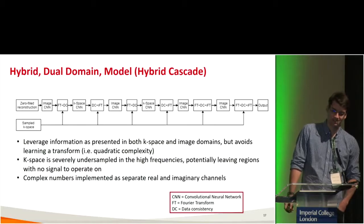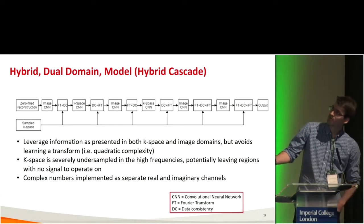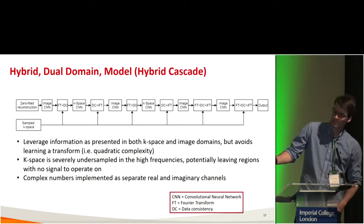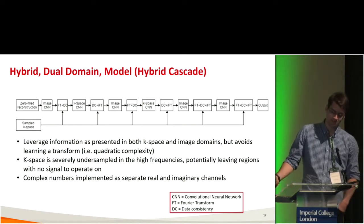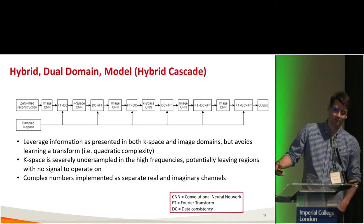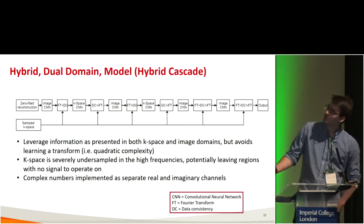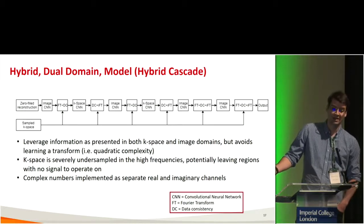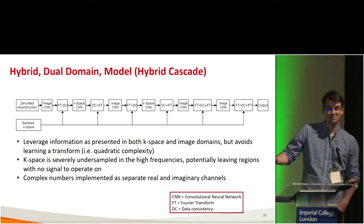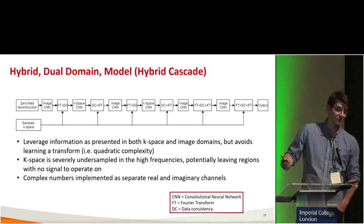The proposed architecture starts with zero-fill reconstruction, then an image domain convolutional neural network, then the Fourier transform, followed by data consistency. Data consistency consists of replacing the network's k-space estimates with the measurements obtained during the sampling process — you replace what the network estimated with the real acquired values. K-space is severely under-sampled in the high frequencies, which is the reason I chose to start with an image domain network: zero-fill reconstruction gives a complete image, whereas in k-space, the high frequencies have regions with no signal, so convolution there yields no output.